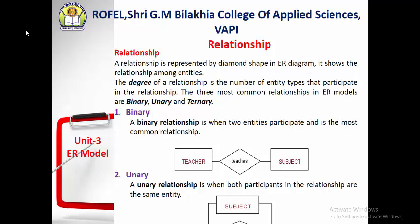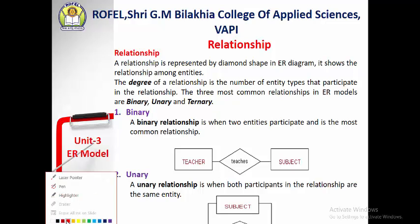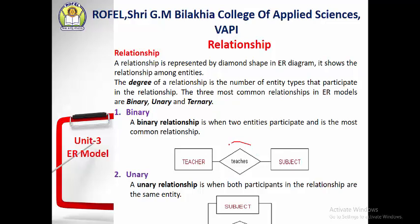The relationship is represented by the diamond shape in an ER diagram. If you want to represent the relationship between two entities, this diamond shape is used. For example, 'teacher' is one entity and 'subject' is another entity. These two entities are related with the relationship 'teaches' — teacher teaches the subject. This diamond box represents the relationship between two entities.